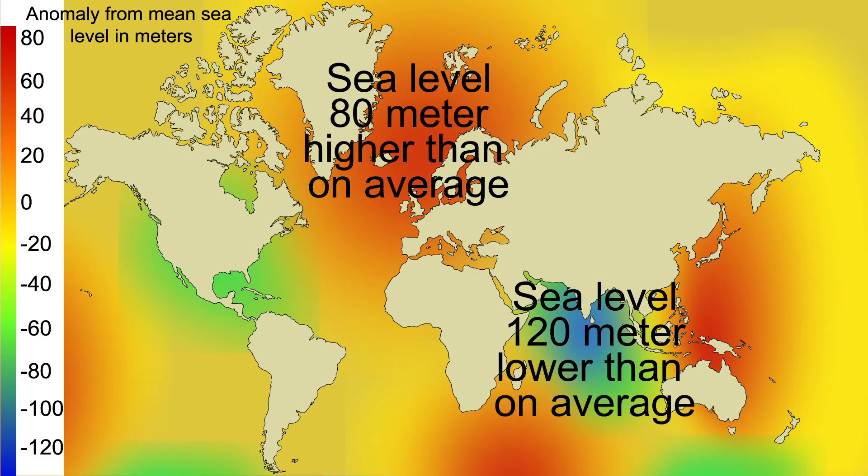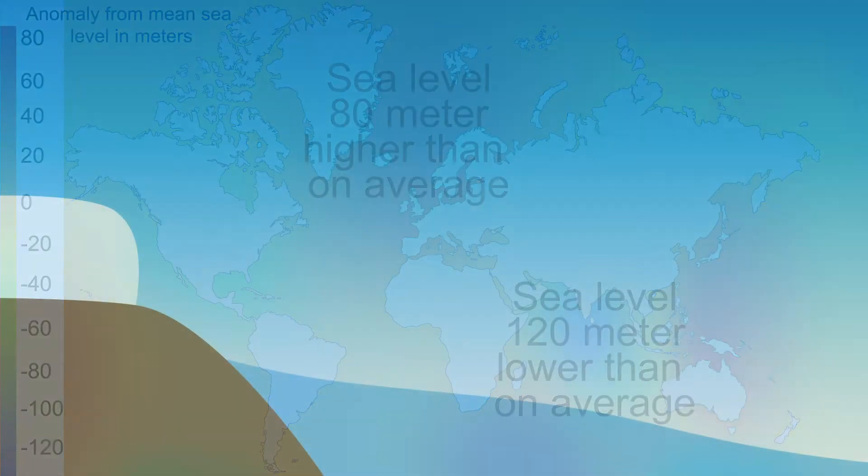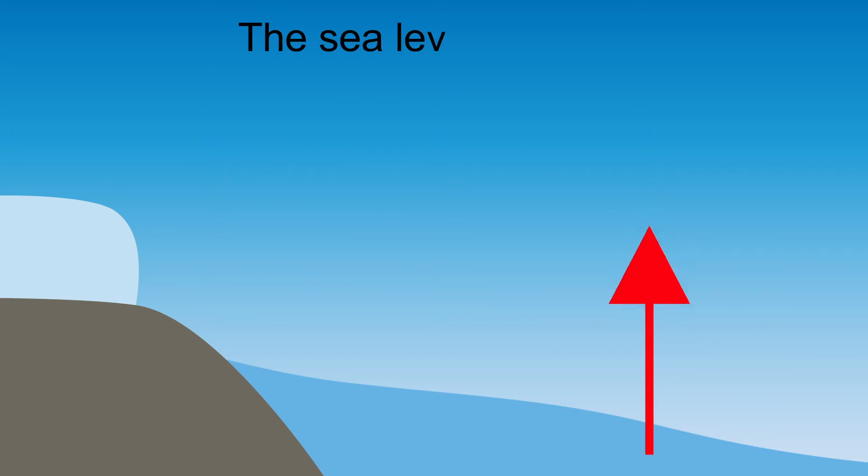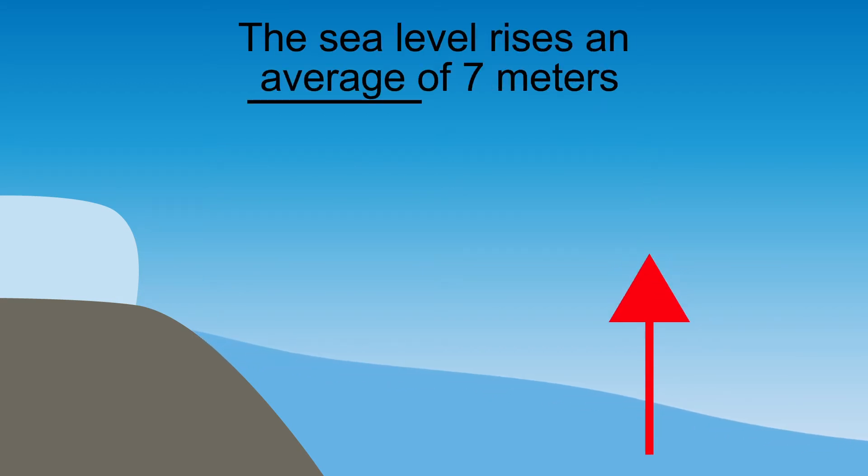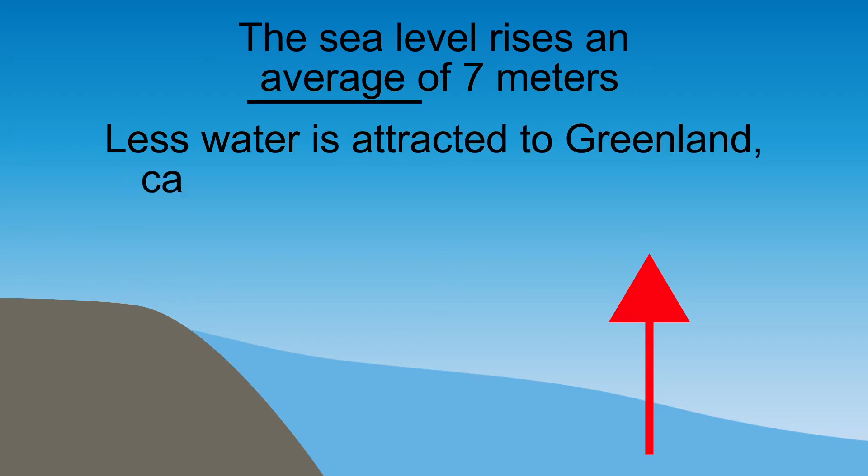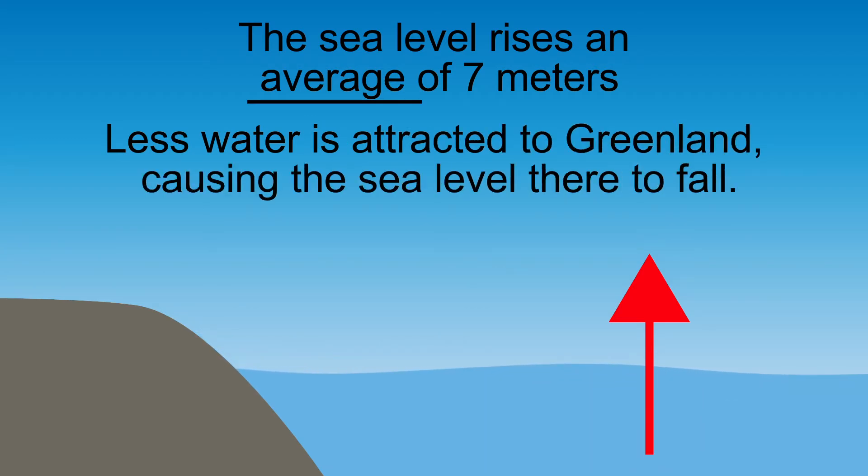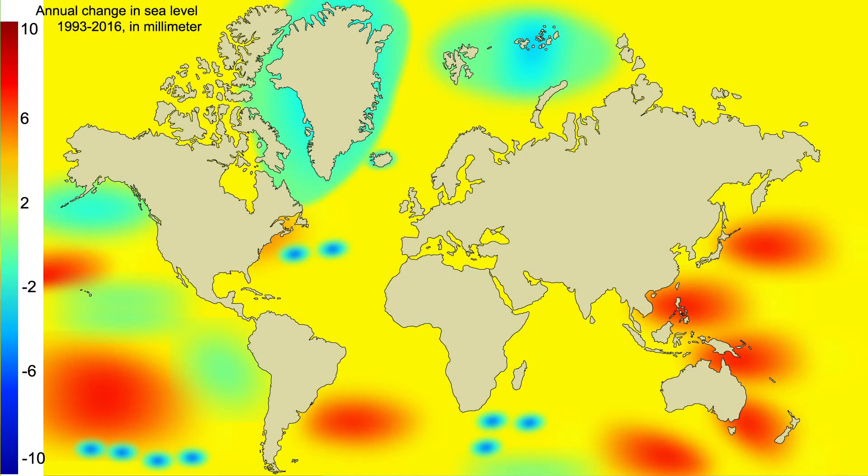When the Greenland ice sheet melts, the sea level rises an average of seven meters, but the ice sheet itself also disappears. As a result, less water is attracted to Greenland, causing the sea level there to fall. It is therefore possible that areas close to Greenland, such as Iceland, will be faced with a drop in sea level.